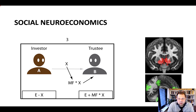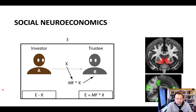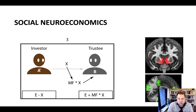Let's now talk about social neuroeconomics, which tries to study the neural correlates of social decisions. I'm illustrating here one of the games commonly used in social neuroeconomics, namely the trust game that has an investor and a trustee. Social neuroeconomics studies interaction between two people in different types of economic games — including the trust game, the prisoner's dilemma, the ultimatum game, the dictator game, and many others.